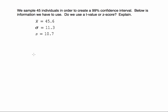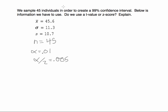One more example. We sample 45 individuals and want to create a 99% confidence interval. Our significance level is 0.01, and splitting that in half gives 0.005. We have the sample mean, sample standard deviation, and the population standard deviation. Since our sample size of 45 is greater than 30, the central limit theorem requirement is met — we can stop there.